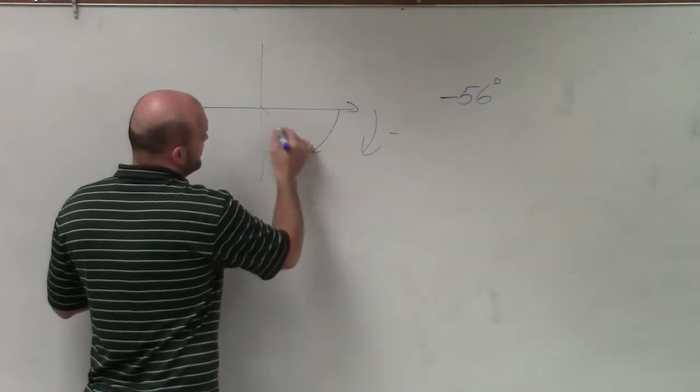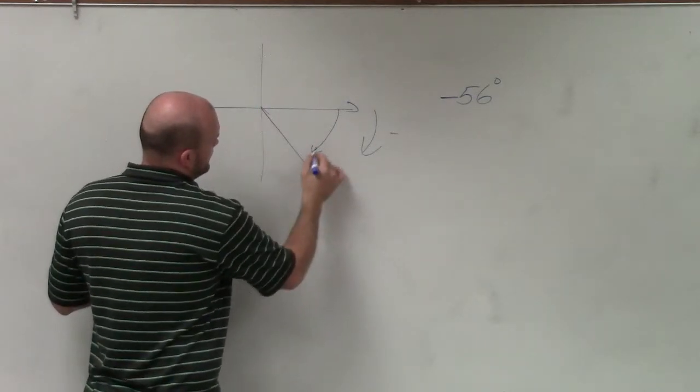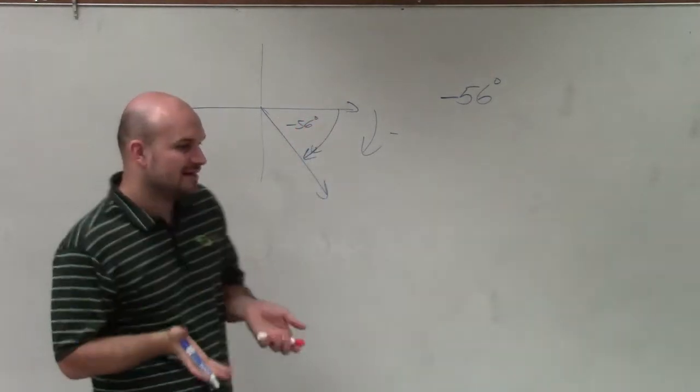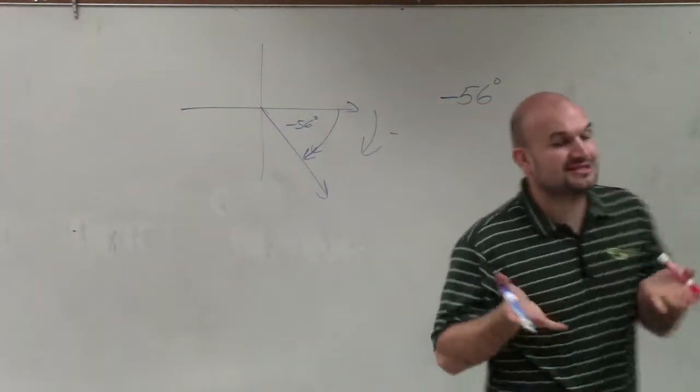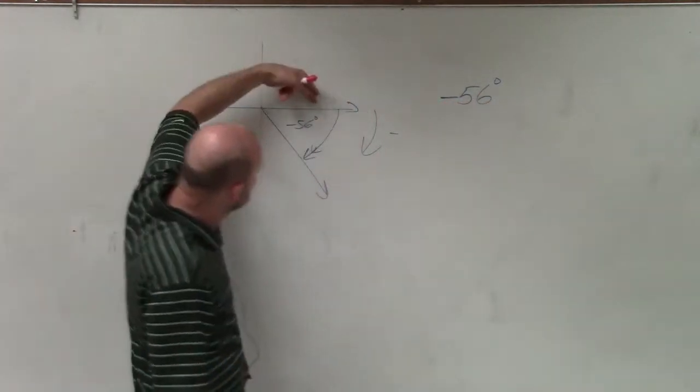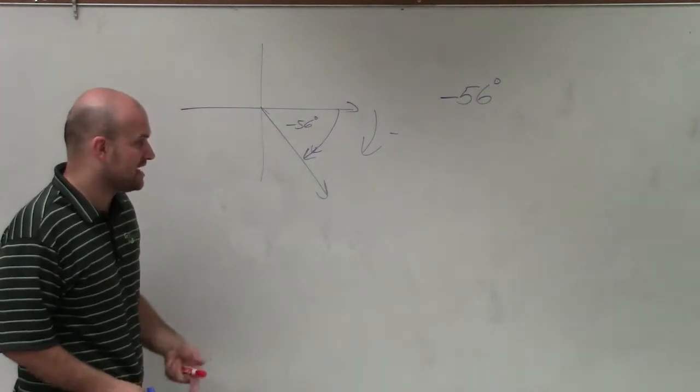It'd be roughly somewhere maybe like this. Alright, so that's an angle of negative 56 degrees. Now, what I'm trying to do is find the smallest negative and the smallest positive coterminal angles. That means the angles that have the exact same initial and exact same terminal sides.